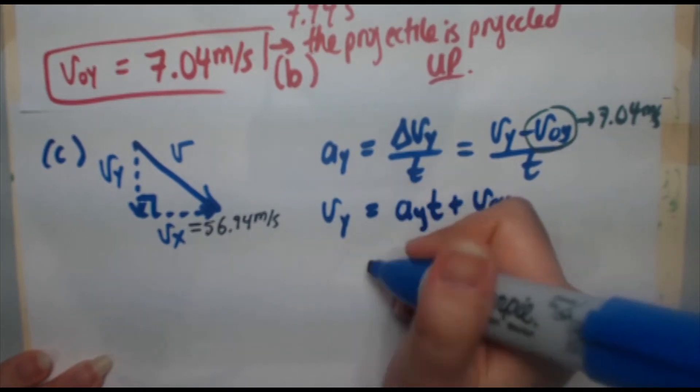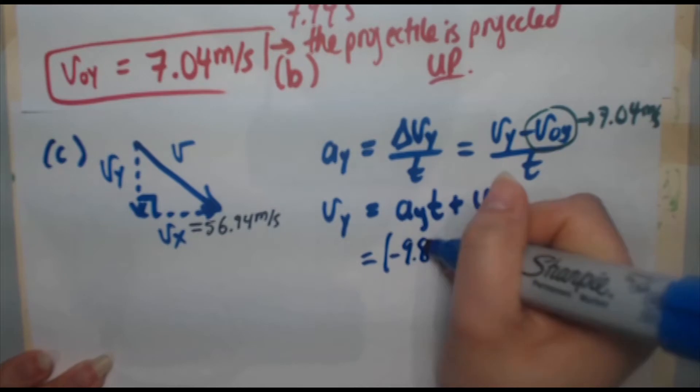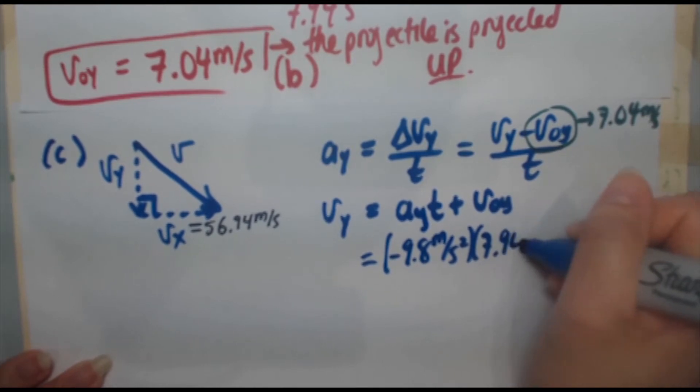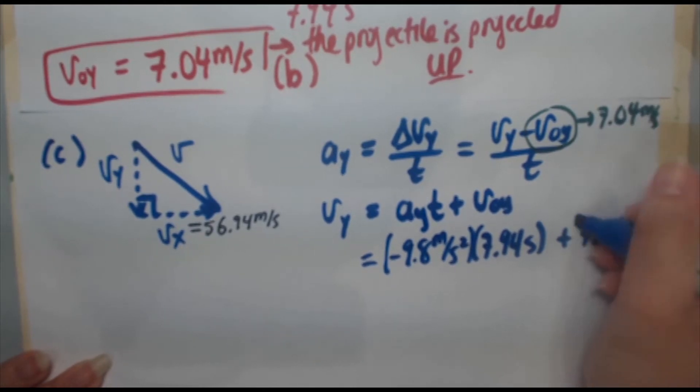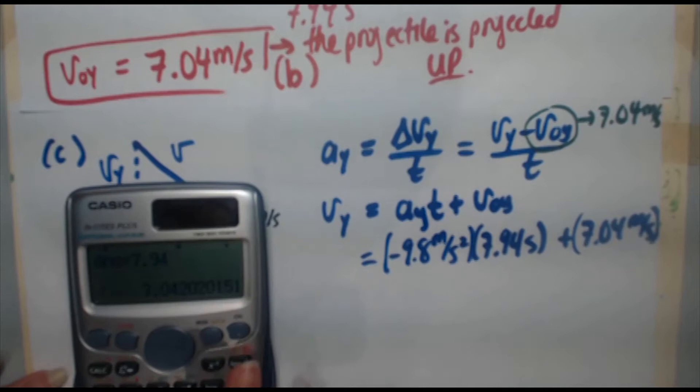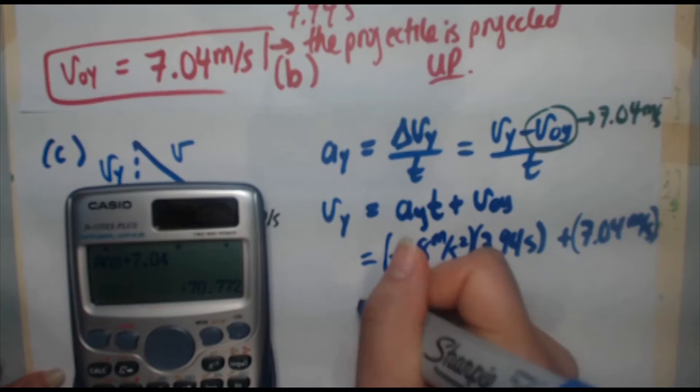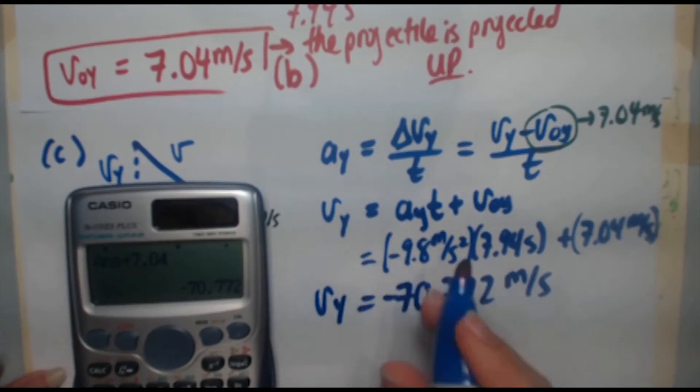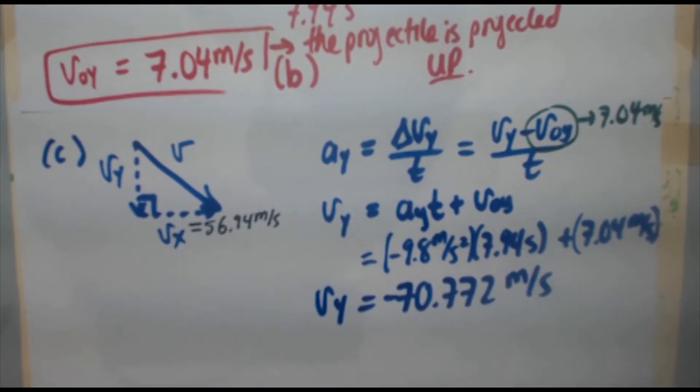Let's just start plugging in our values. AY negative 9.8 meters per second squared, the time is 7.94 seconds plus V0Y, which is 7.04 meters per second. So let's determine our VY there. Negative times a positive, you're going to get a negative number, 9.8 times 7.94. You get negative 77.812, add to that 7.04 and you'll get negative 70.772 meters per second. This is not our final answer, so we can keep a couple of decimal places there.